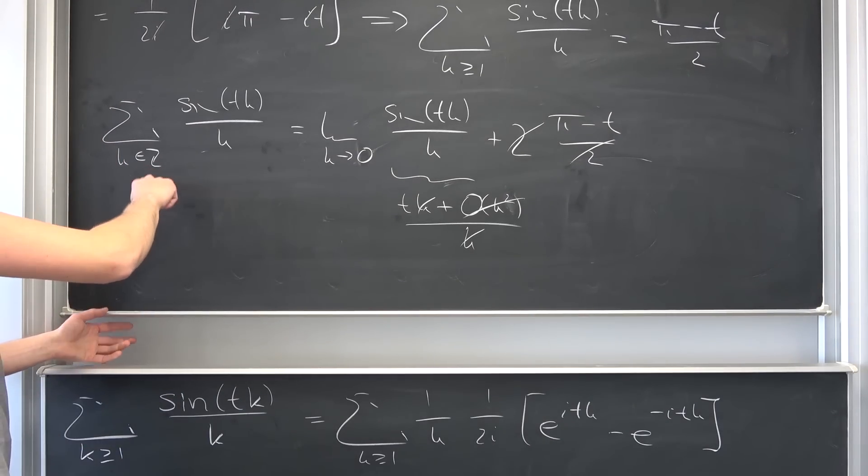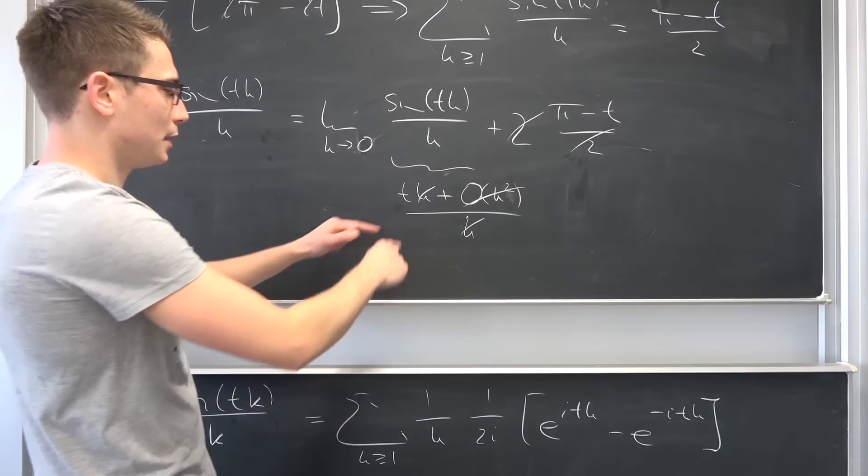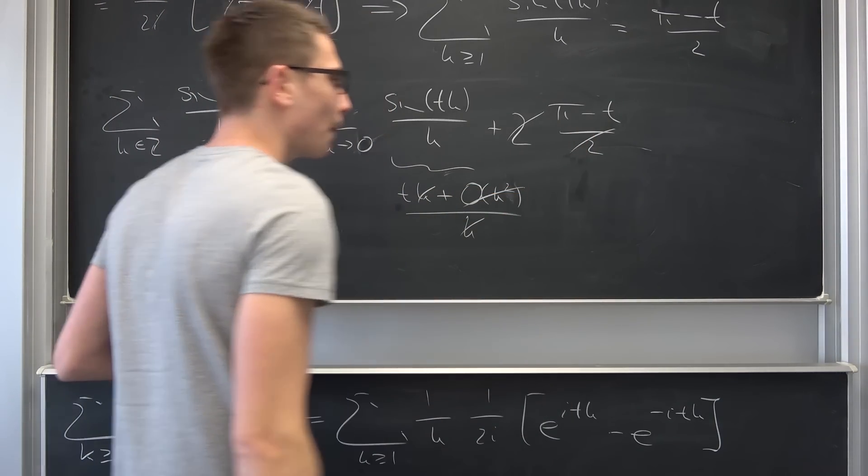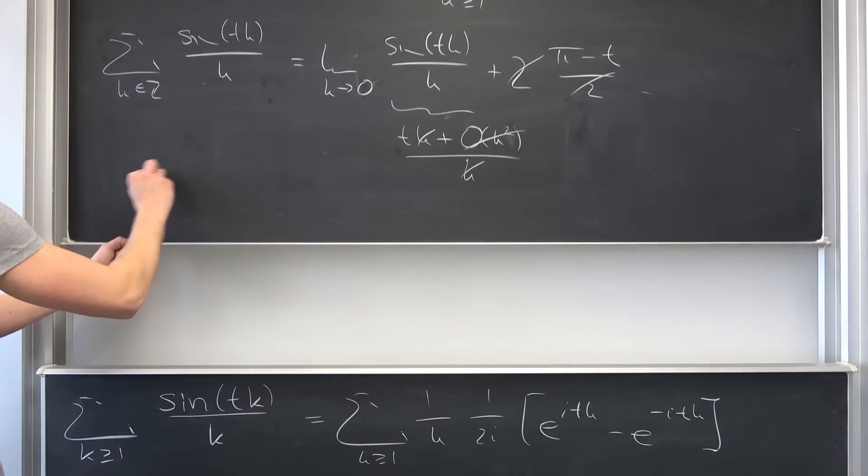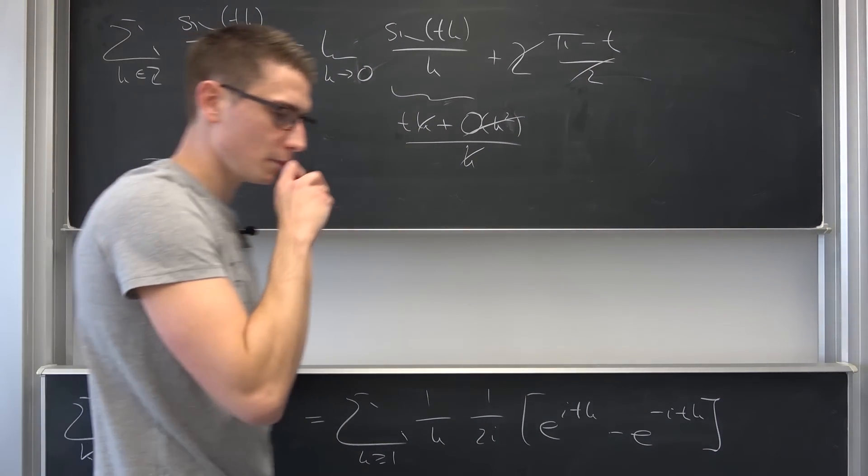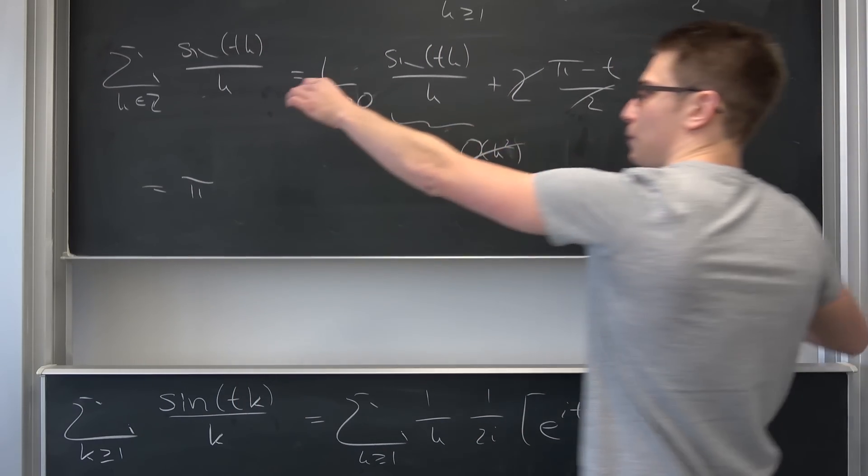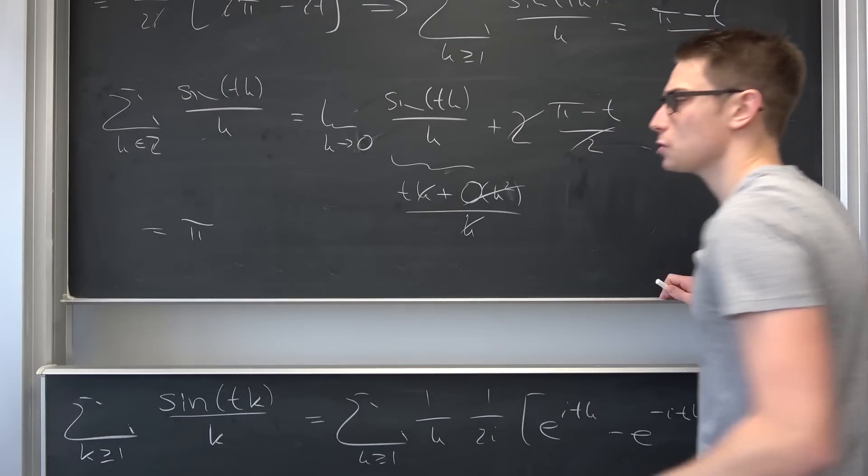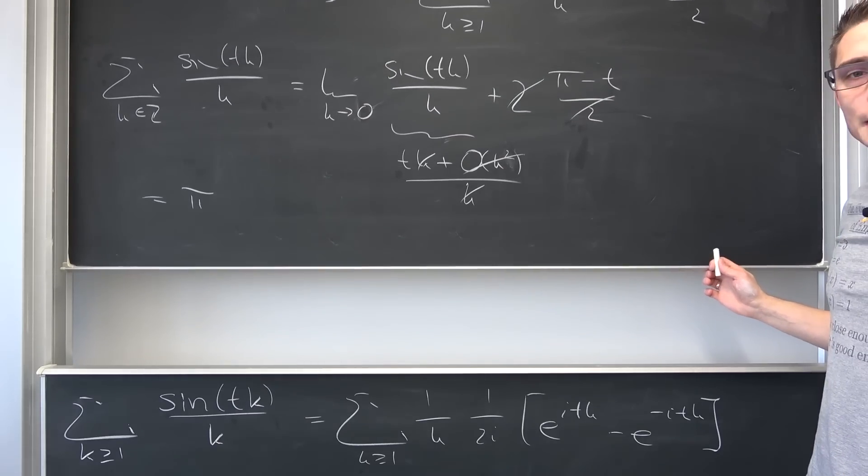Overall the limit is going to be t. Meaning this summation over the whole of the positive and negative integers is going to be t minus t plus pi, is simply going to give us pi. And this is a curious thing. Even though we have parametrized this with a t, we are going to get pi.